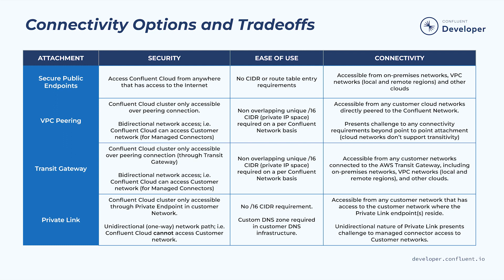Each of the different cloud networking options have different security behaviors and provide different levels of ease of use and access. With secure public endpoints, you can access your Confluent Cloud cluster from anywhere. It's easy to set up and can be used for clients and services that span from on-premise environments to any private or public cloud.